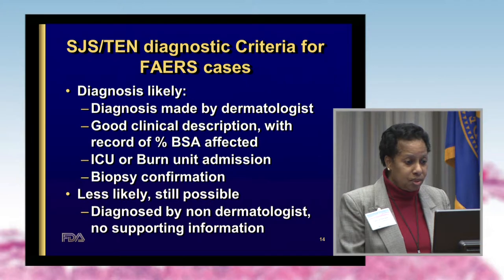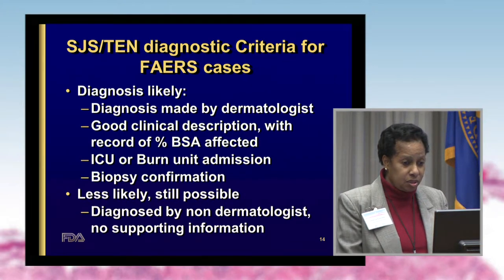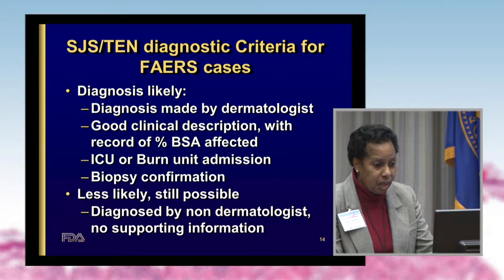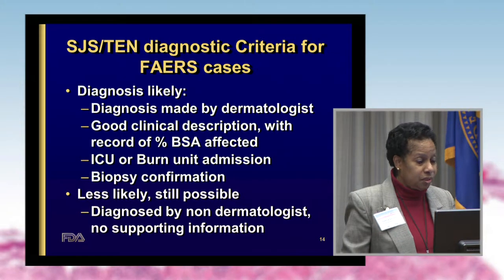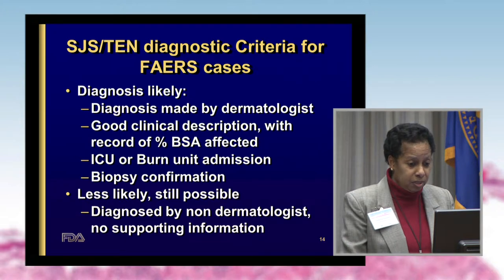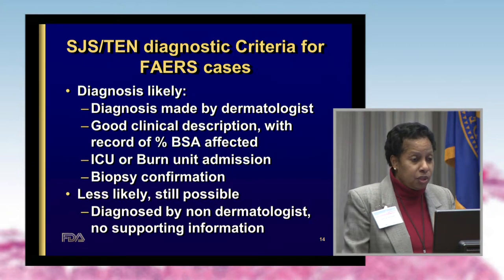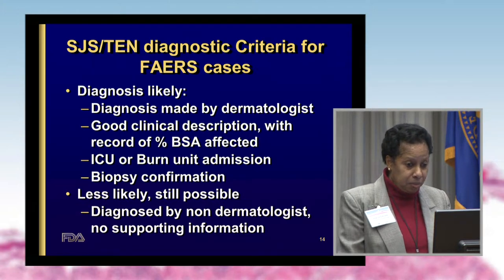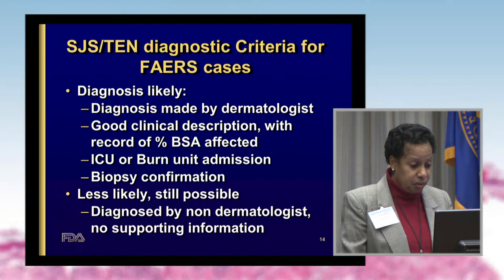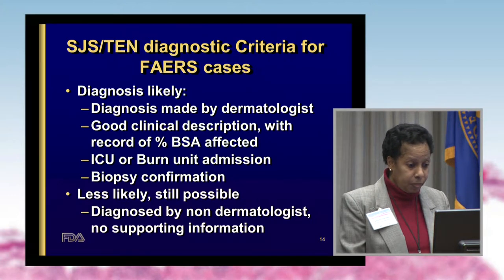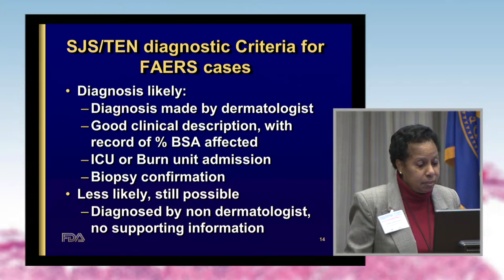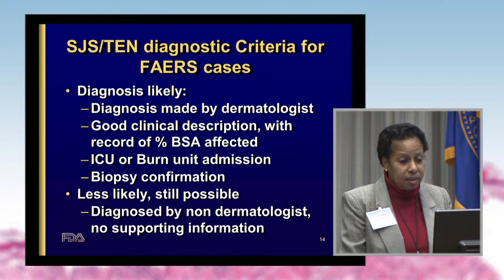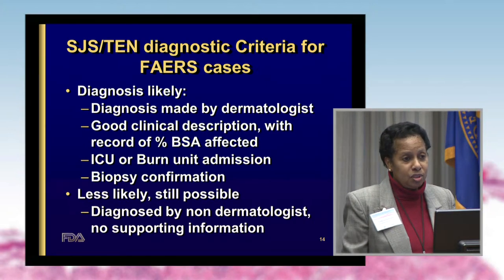We say a diagnosis is likely if it is made by a dermatologist and there is a good clinical description — especially a record of the percentage of body surface area involved in blistering and detachment. We accept the diagnosis if the patient was nursed in an ICU or burn unit, or if a biopsy confirmed SJS or TEN. We say it is less likely but still possible if the diagnosis was made by a non-dermatologist with no supporting information.